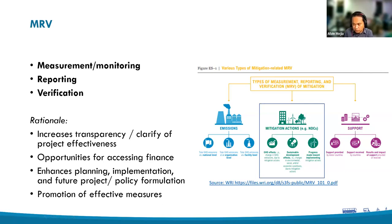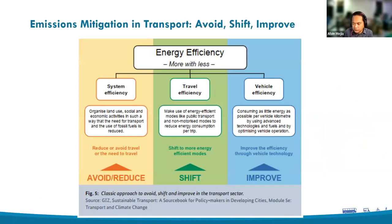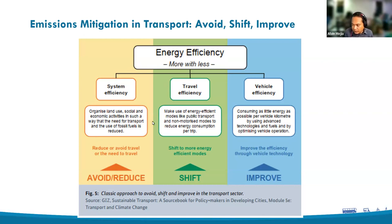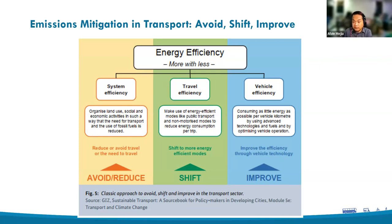In terms of emissions mitigation within the mobility or transport sector, we talk about the three pillars: the avoid-shift-improve framework. The first is avoidance of the need to travel through the organization of land use, reflected in calculations as a reduction of passenger or freight activity. Then we look into measures that shift activity into more energy-efficient modes, such as public transport and non-motorized transport — shifting passenger kilometers or ton-kilometers. And lastly, improved measures, about improving the efficiency of vehicles, including electrification.